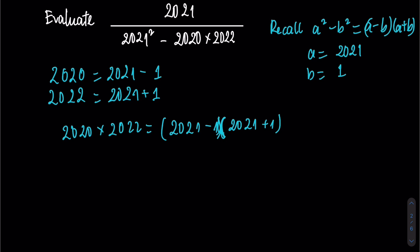By applying the difference between two squares, this equals 2021 squared minus 1 squared, which equals 2021 squared minus 1.